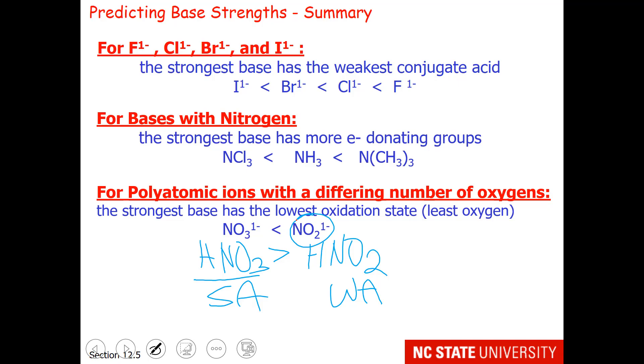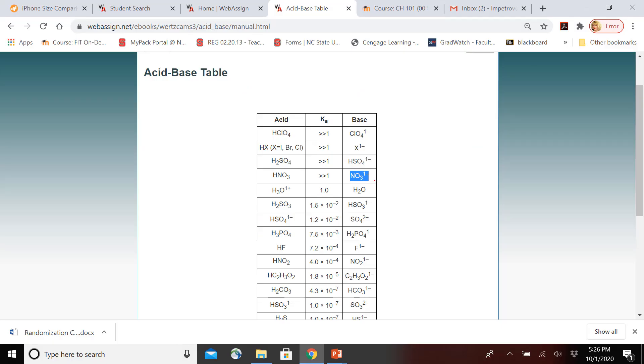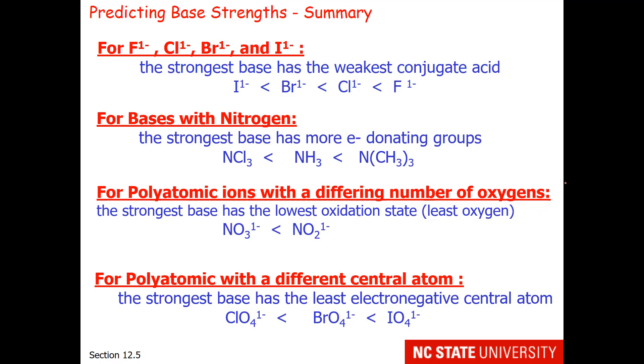Let's check that out on the chart. Here is the nitrate ion on the chart. It's in the weak base region. Here is the nitrite ion. It's further down on the right, making it a stronger base.